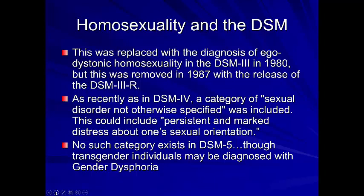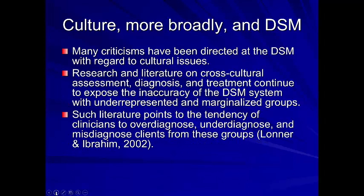Ego-dystonic homosexuality referred to someone who was homosexual but unhappy about it. As recently as the DSM-IV, a category of sexual disorder not otherwise specified could include persistent marked distress about one's sexual orientation. In DSM-5, transgender individuals may still be diagnosed with gender dysphoria. We have to be very careful about pathologizing things that are culturally bound — in many cultures homosexuality can still be viewed negatively, and it's not necessarily that the person feels bad about their orientation, but rather the viewpoints of the culture in which they live.